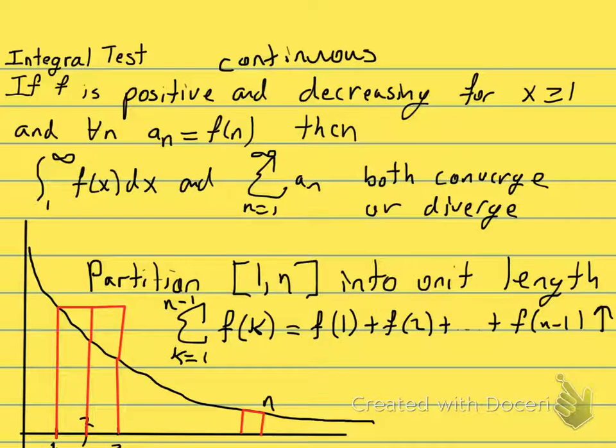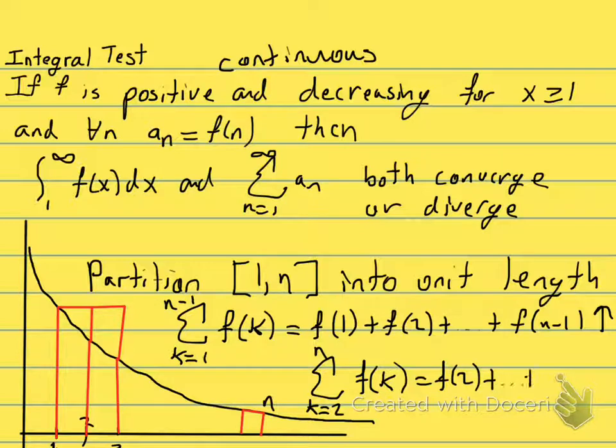Then we'll do the same game, but we'll do it with the lower rectangles, so we're going to use the right-hand sides of the partition, so we'll go from 2 to n, so f(2) plus all the way plus f(n). And that's our lower sums, our lower rectangles.